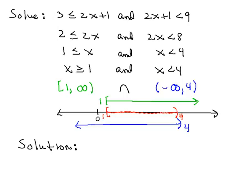So if we express the solution in interval notation, we would have bracket 1, comma, 4, parentheses. And if we choose to write it in set builder notation, we would have the set of all x such that 1 is less than or equal to x is less than 4. And we're all done.